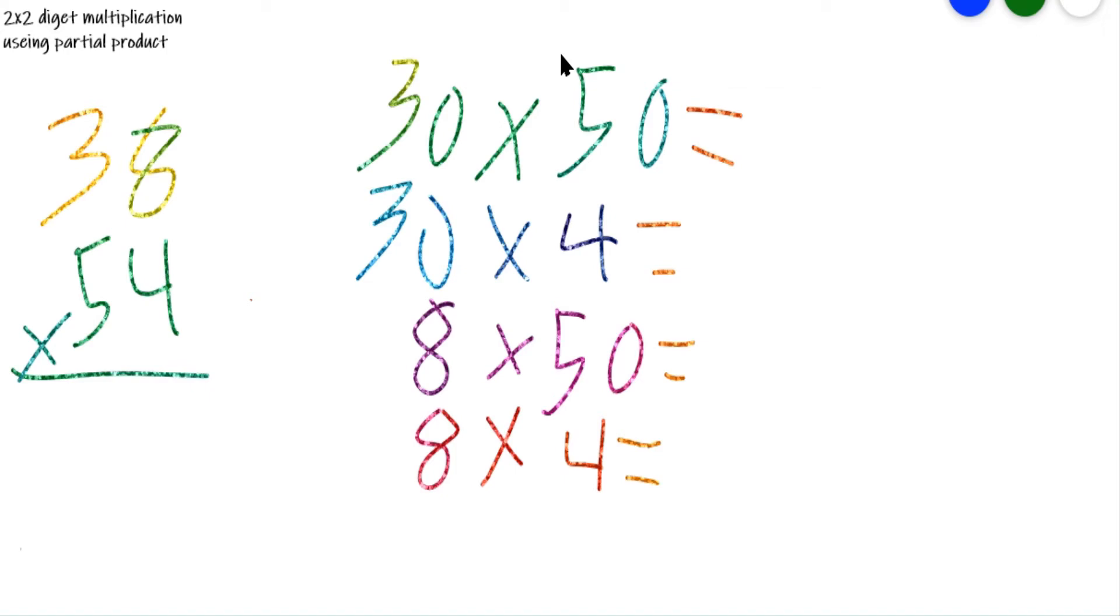Hello, today we will be doing 2x2 digit multiplication by using partial product. So let's say I have 54 buckets and in each of those buckets I have 38 Legos.